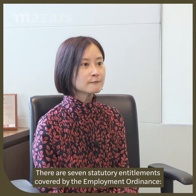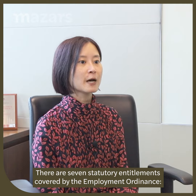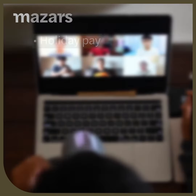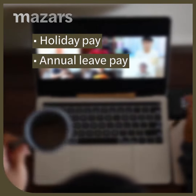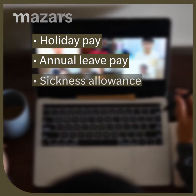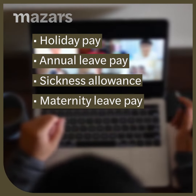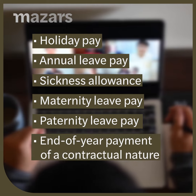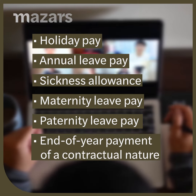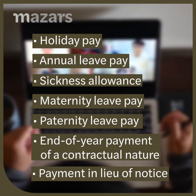There are seven statutory entitlements covered by the Employment Ordinance, including holiday pay, annual leave pay, sickness allowance, maternity leave pay, paternity leave pay, end-of-year payment of a contractual nature, and payment in lieu of notice.